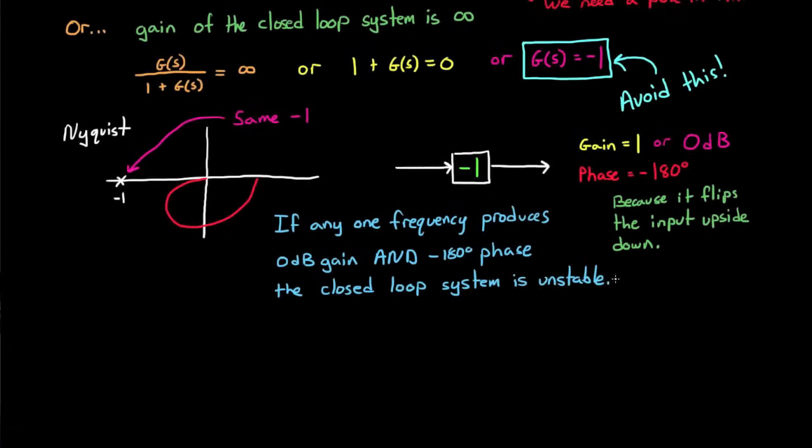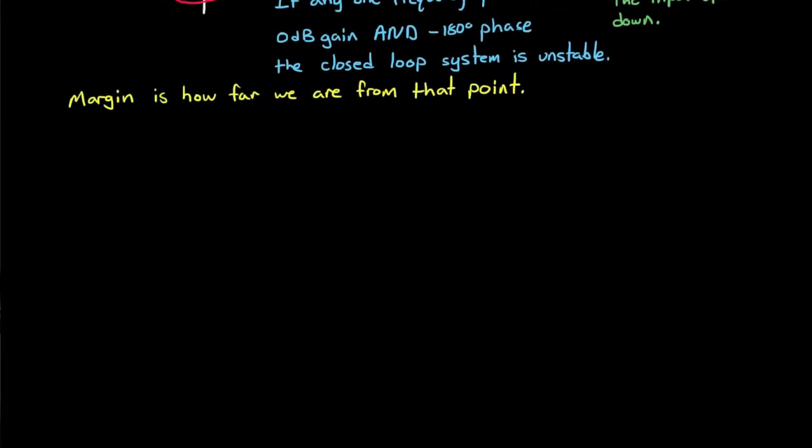So the minus 1 point can be represented by 0 dB gain and minus 180 degrees phase. And if any one frequency across the spectrum hits that point, the entire system is unstable. So we need to stay away from that point at all frequencies. So now we can finally quantify what we mean by margin. Margin tells us how far away from the minus 1 point, or 0 dB and minus 180 degrees phase, we really are.